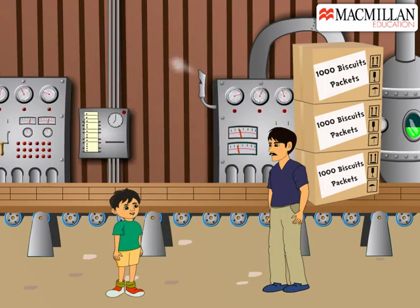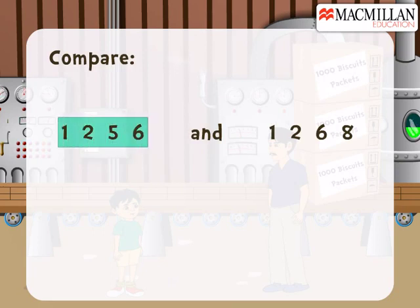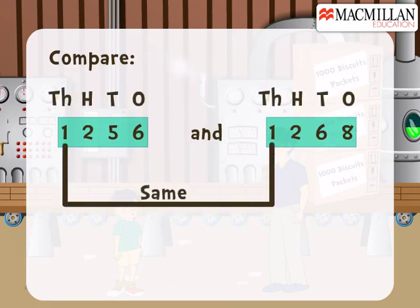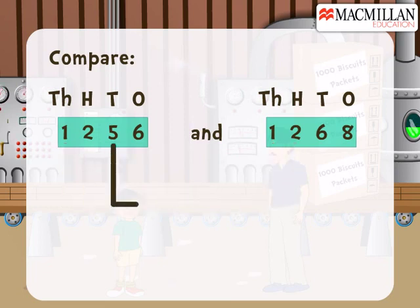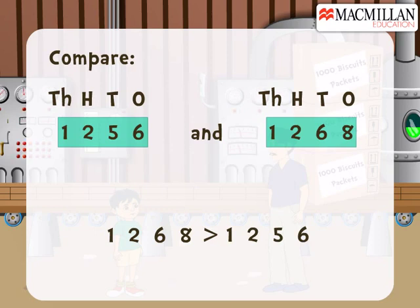All right, Dad — now you give me some numbers and I will compare their values. Okay, compare the numbers one thousand two hundred fifty-six and one thousand two hundred sixty-eight. Both numbers have the same digit at the thousands place — that is one. The same is true at the hundreds place. But at the tens place, six is greater than five. So one thousand two hundred sixty-eight is greater than one thousand two hundred fifty-six.